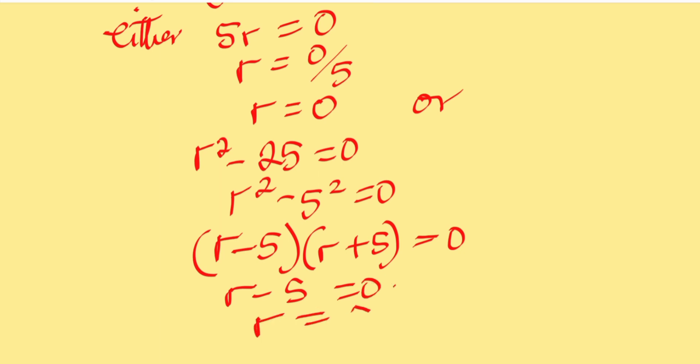So R minus 5 is 0, therefore R is equal to 5. Or R plus 5 is equal to 0, so R is minus 5.